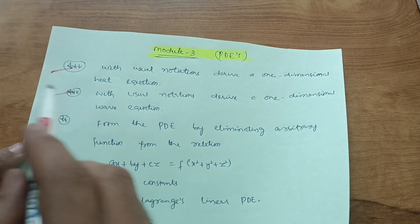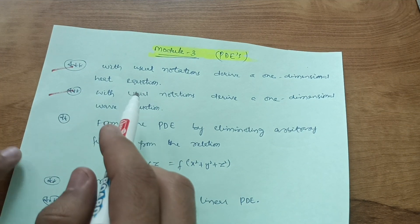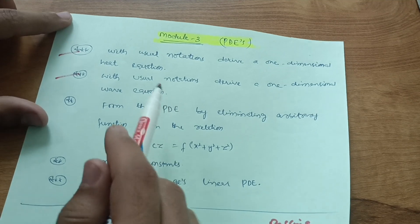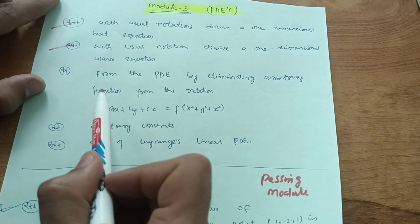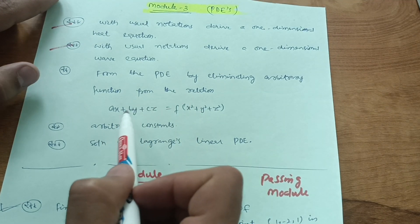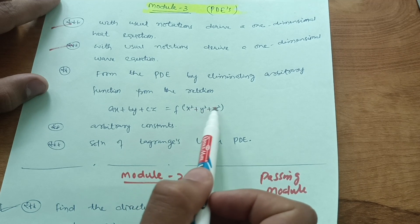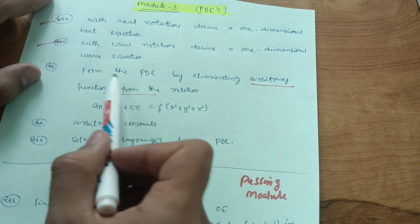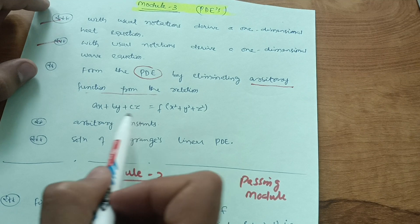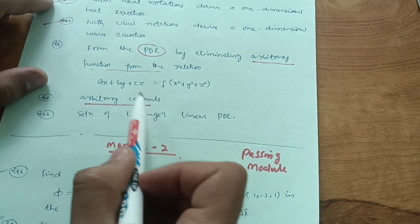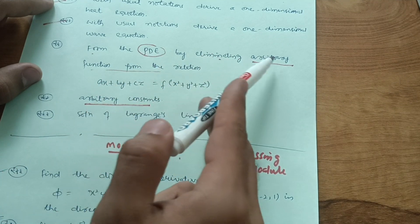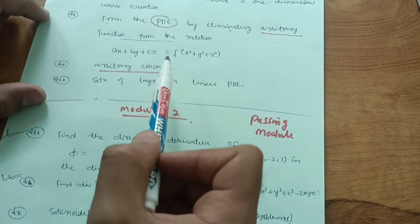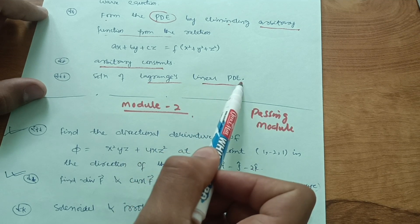If you are only covering the passing modules mentioned, then referring to just one question from Module 3 is enough to pass this subject. Additionally, focus on forming partial differential equations by eliminating arbitrary functions — for example: ax + by + cz = f(x² + y² + z²). Also cover PDE formation by eliminating arbitrary constants. The Lagrange linear partial differential equation solution is also in the syllabus if you want to cover it.